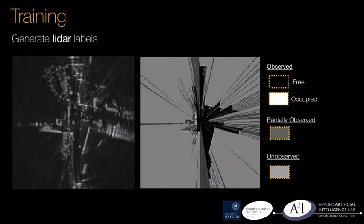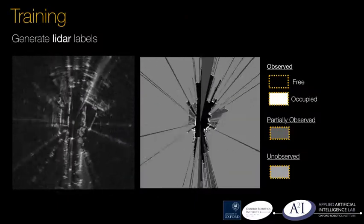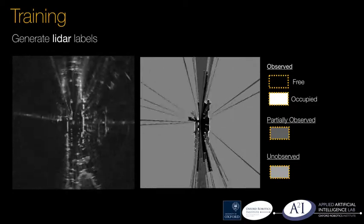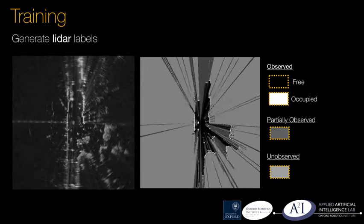In order to generate training labels, the output of multiple LiDARs are combined and projected down into the radar frame. The space is partitioned into observed, where labels for free and occupied space exist, partially observed, and unobserved space where the state of occupancy from LiDAR is unknown.